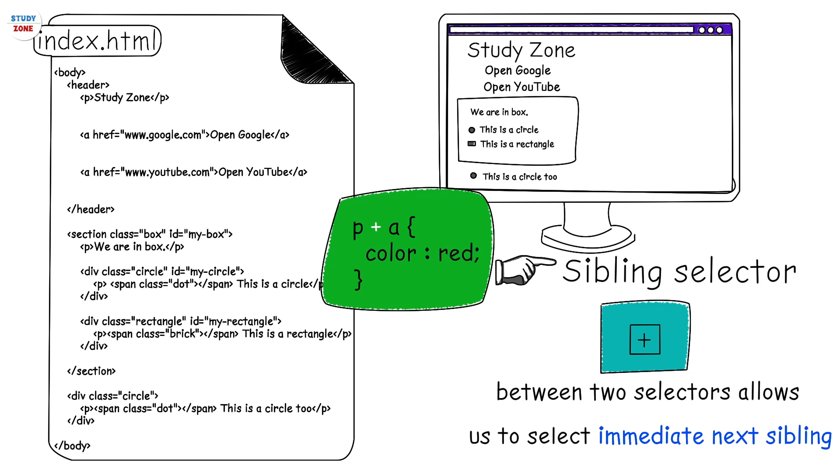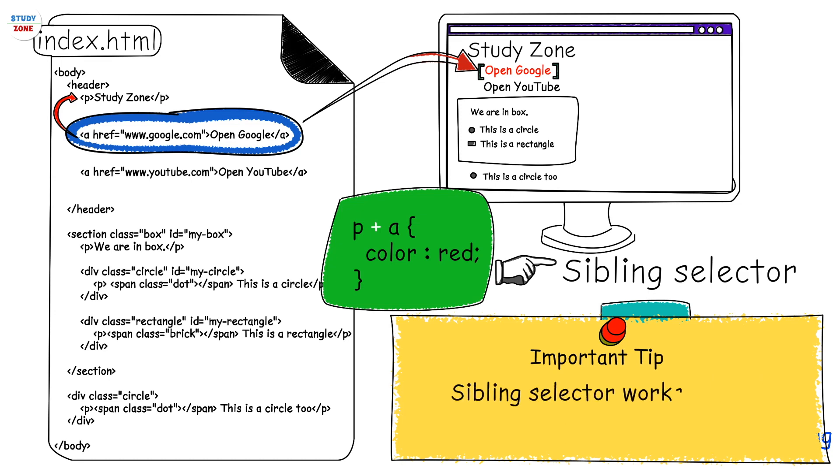In our example, we have only one anchor tag with href www.google.com which is next to a p tag. Sibling selector works only on the elements which have same parent.